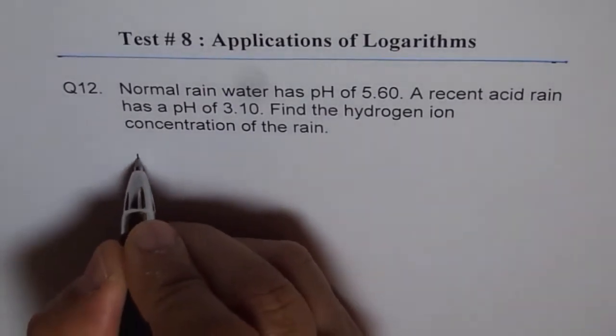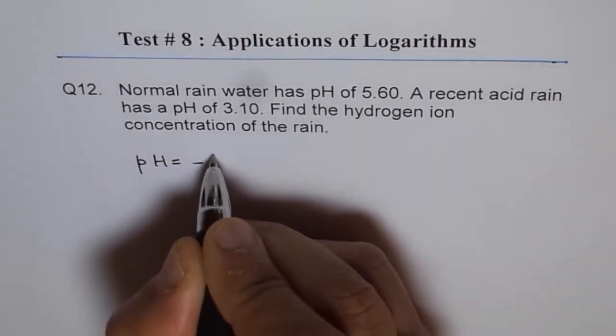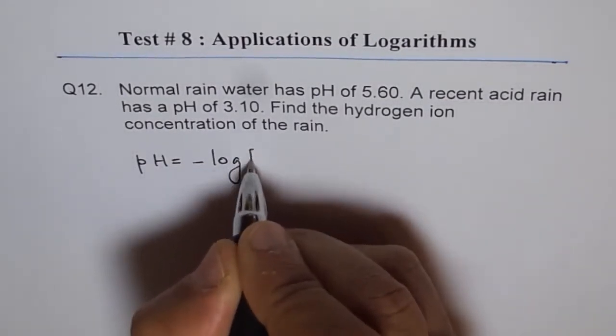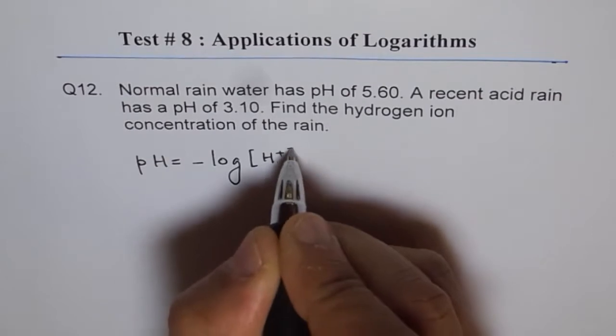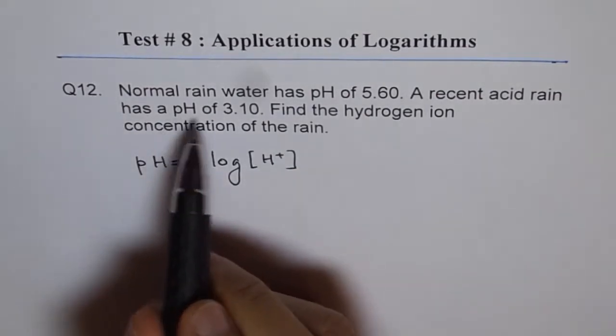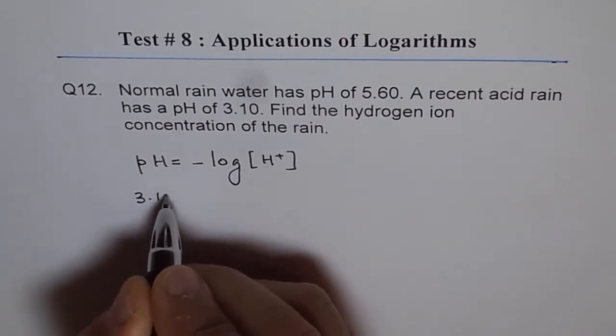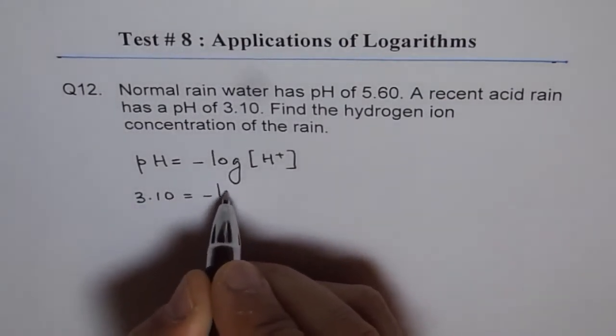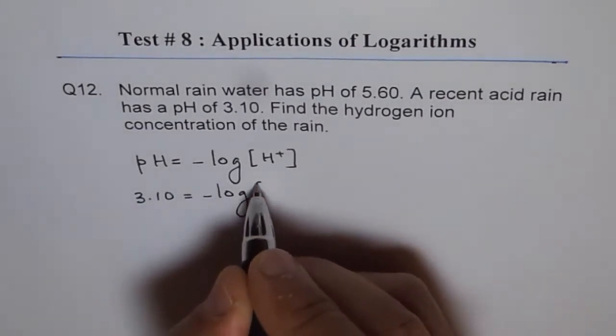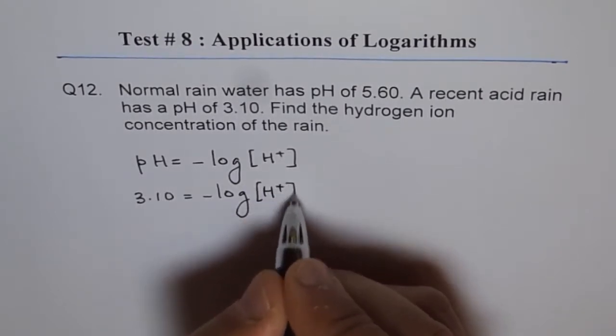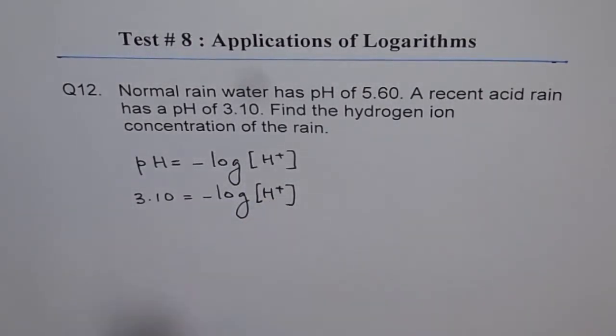As you know, pH is equal to minus log of hydrogen ion concentration. Now, here we are given pH of 3.1. So, 3.10 is equal to minus log of hydrogen ion concentration, and we need to find what is hydrogen ion concentration.